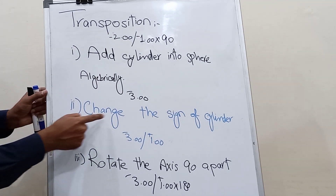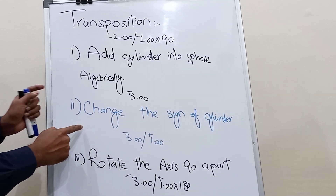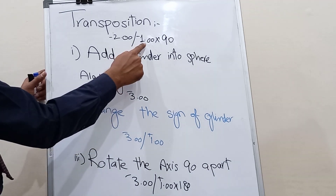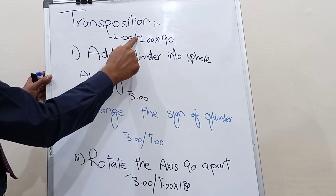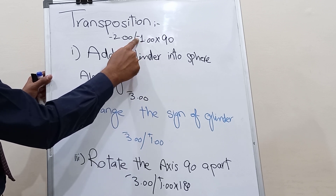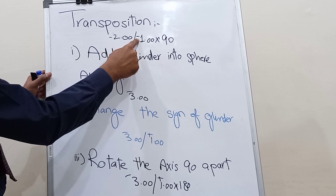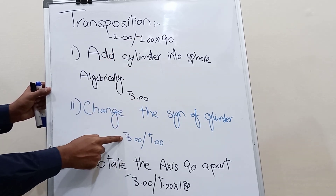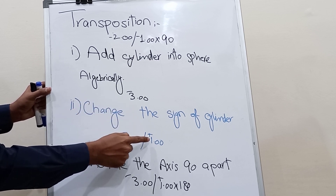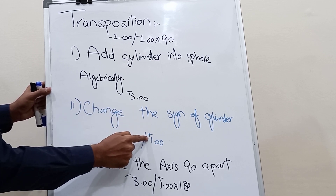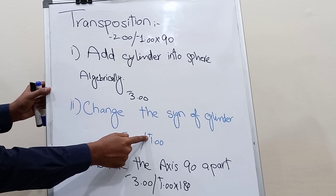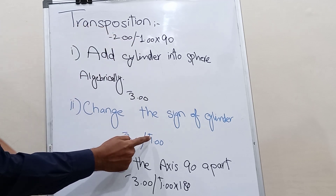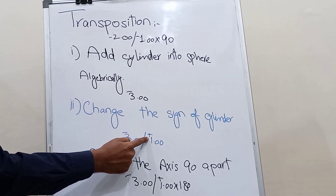The next step is to change the sign of the cylinder. We simply change the sign of the cylinder. We have cylinder minus 1, so we change the sign from minus to plus. As you can see, the new sphere is minus 3 as discussed, and now with the second step our new cylinder carries a plus sign.